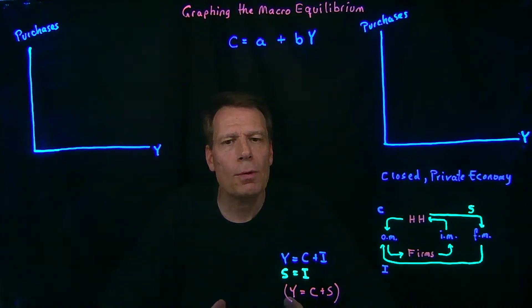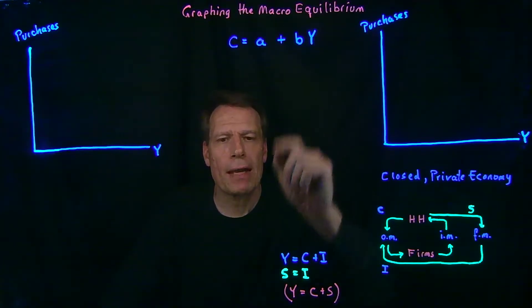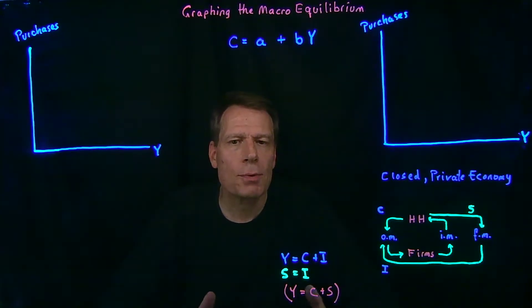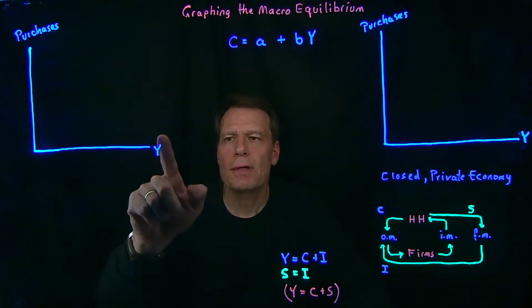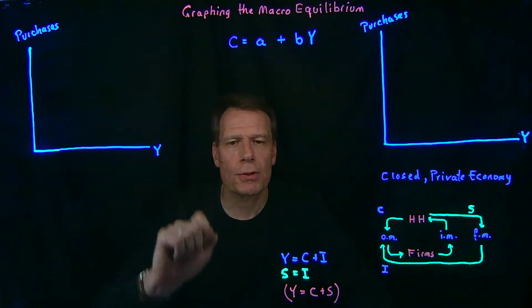We now want to ask, how would we go about graphing that macroequilibrium? And so we'll start with a graph where we have real GDP or real income on the horizontal axis and purchases on the vertical axis.